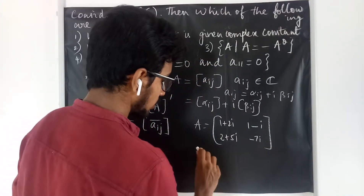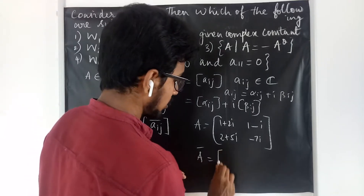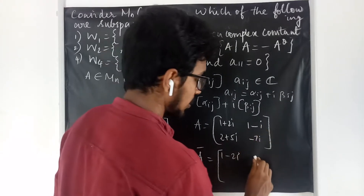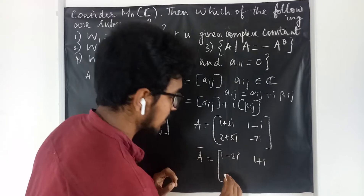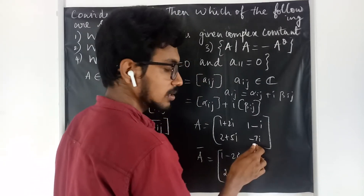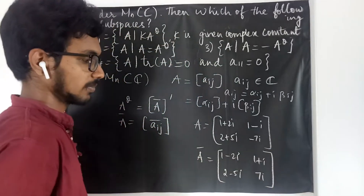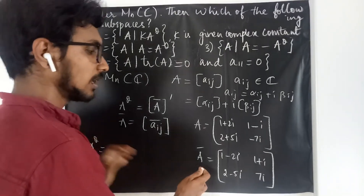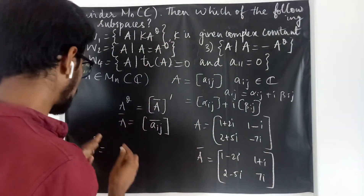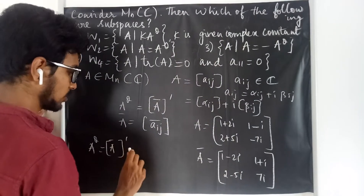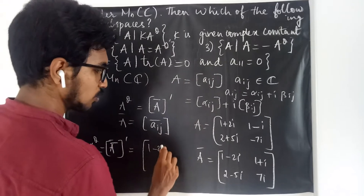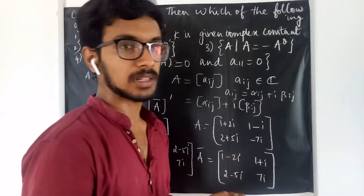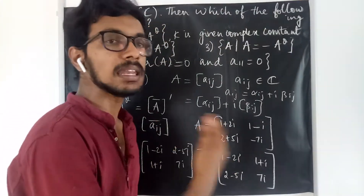What do we mean by A conjugate? The conjugate of 1+2i is 1−2i, the conjugate of 1−i is 1+i, the conjugate of 2+5i is 2−5i, and the conjugate of −7i is 7i. So what is A^θ? After taking the conjugate of the matrix, we take the transpose, giving us [1−2i, 2−5i; 1+i, 7i]. This operation can be extended to any n×n matrix.